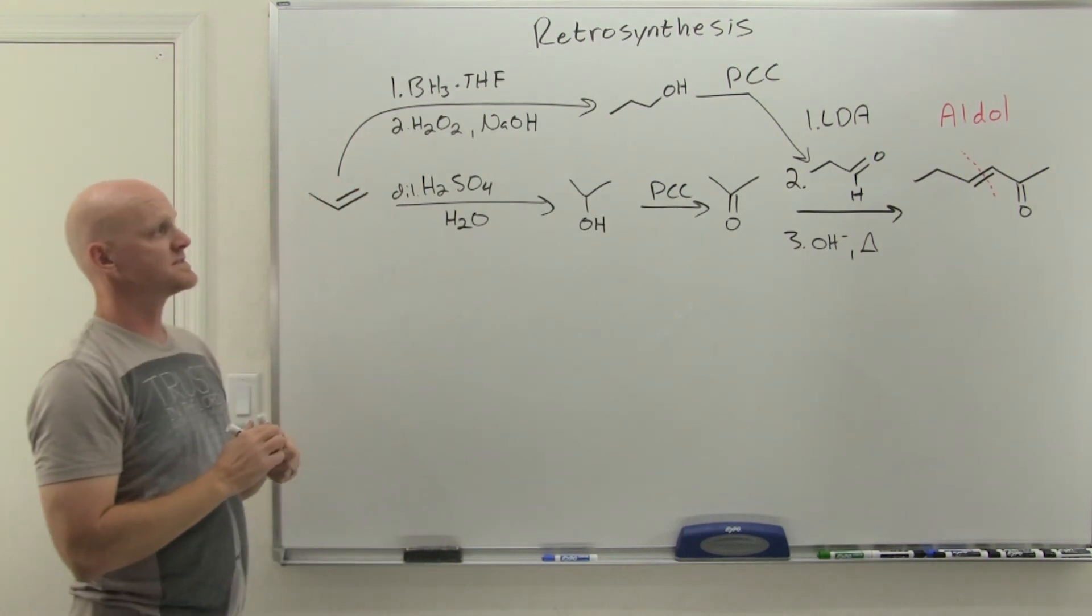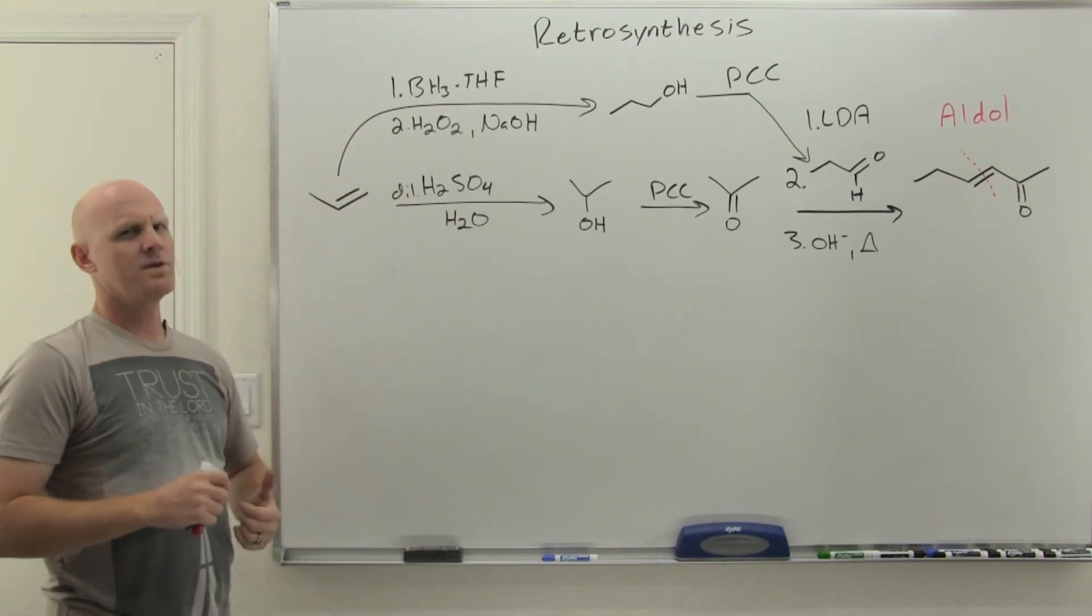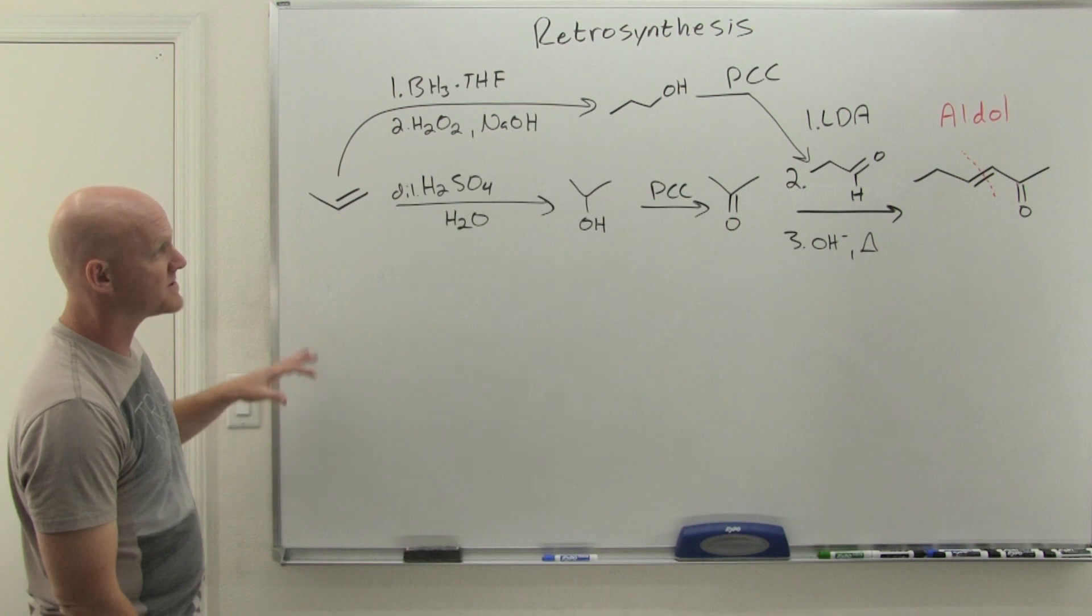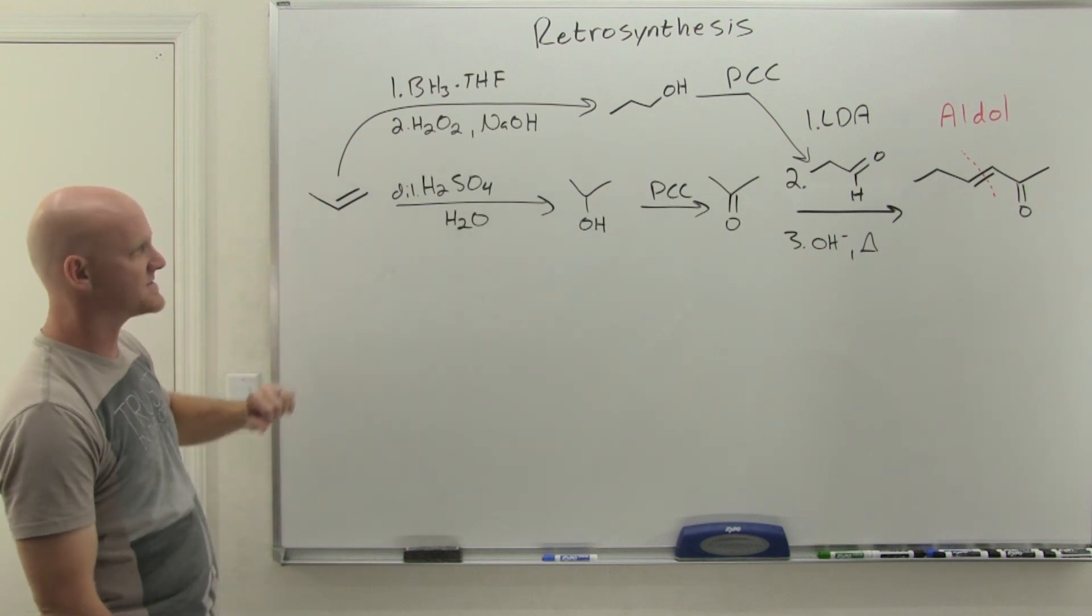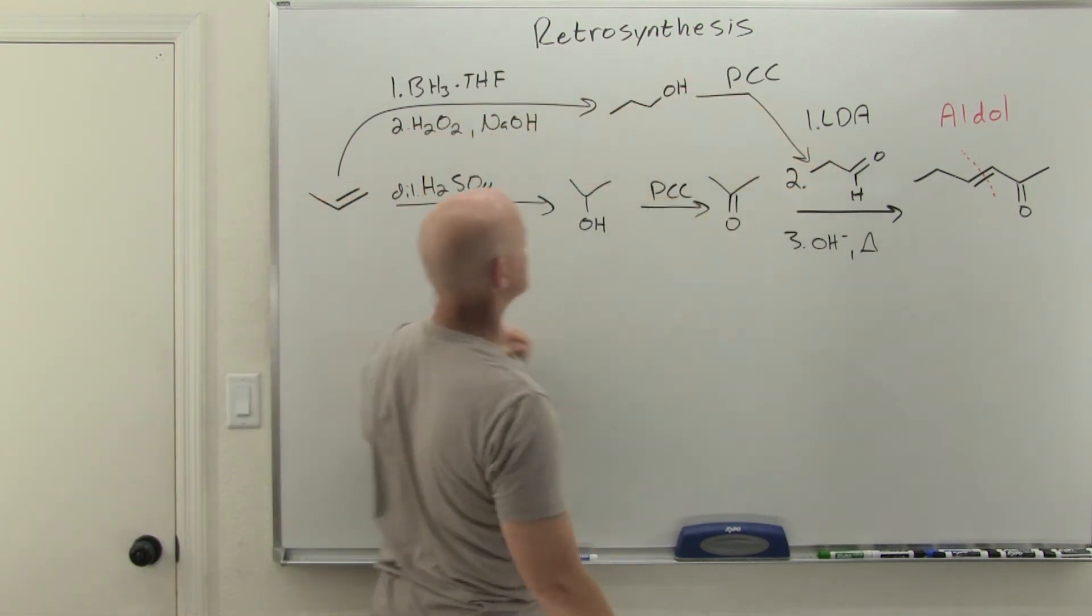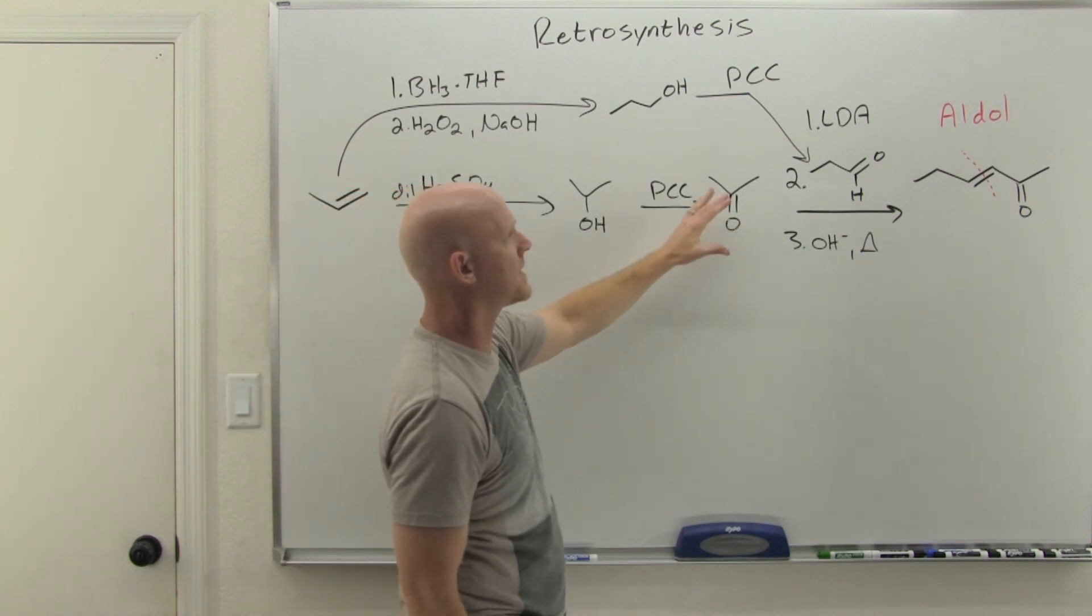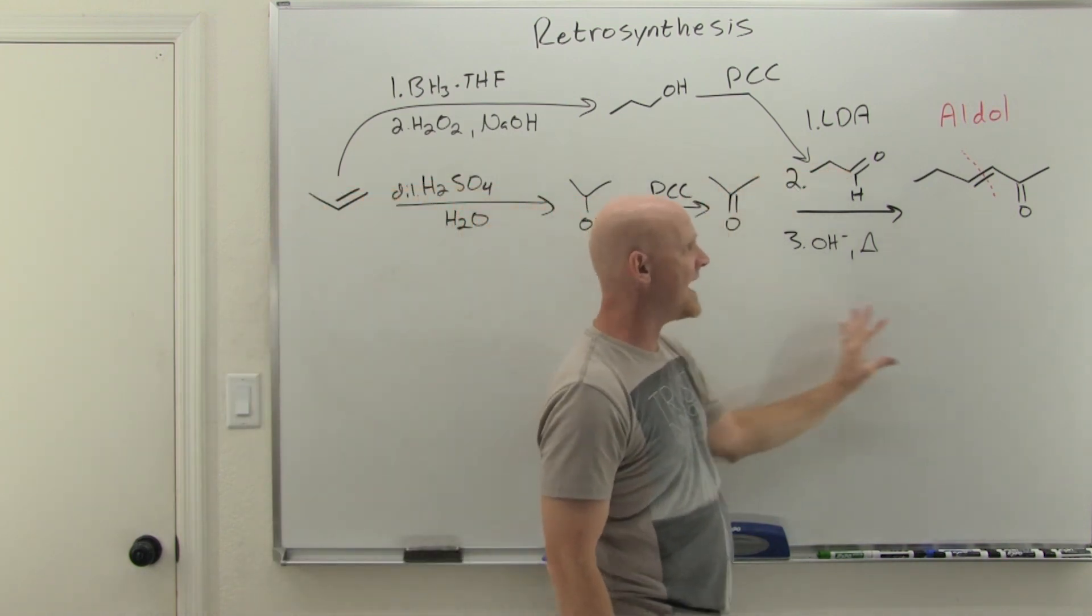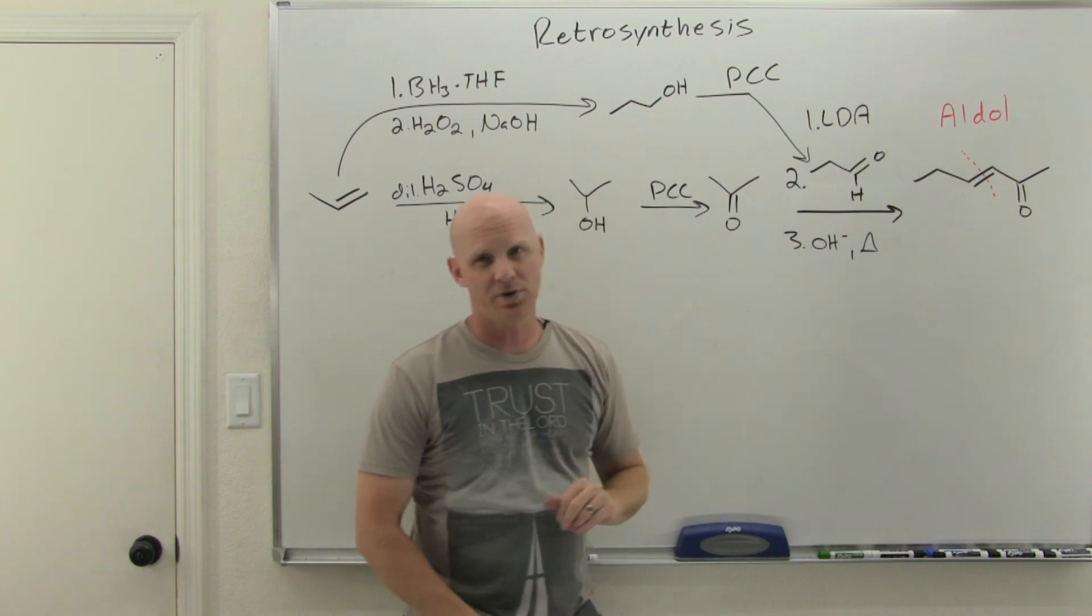That's your synthesis. A little bit different way to phrase a synthesis problem, because you've actually got two branches to this synthesis. You've got to make the propanal, which takes a couple steps. You've got to make the acetone, which takes a couple steps. Then you combine the two in an aldol to get that final product.